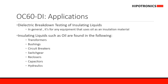The OC60 DI is used to perform dielectric breakdown testing on insulating liquids, most commonly oil. Essentially any equipment that uses oil as an insulating liquid will need to have that oil tested. This type of equipment includes transformers, bushings, switchgears, capacitors, hydraulics, circuit breakers, and reclosers.